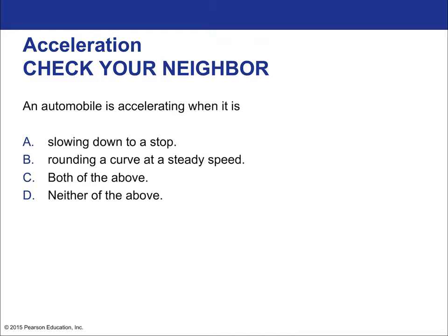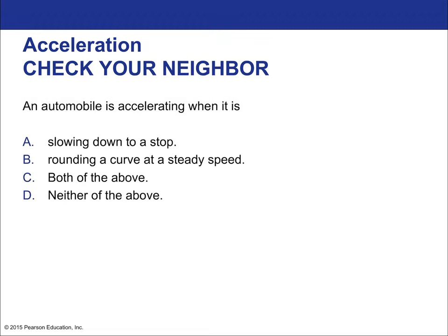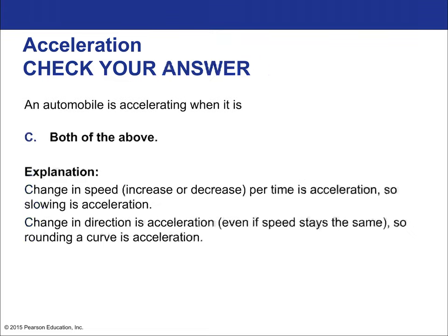Quick check: an automobile is accelerating when it is both slowing down to a stop in a straight line and when rounding a curve at a steady speed. Those are both forms of acceleration — change in speed or change in direction, or both. It could be slowing into a turn or speeding out of a turn; if it's either, it's an acceleration.